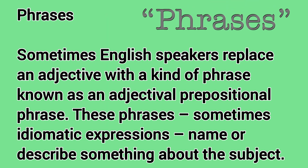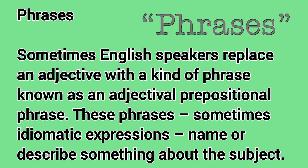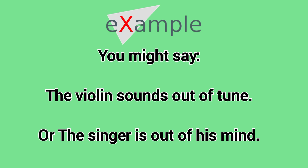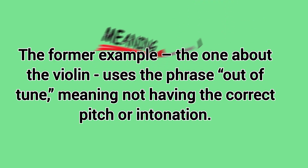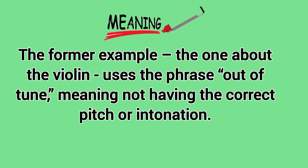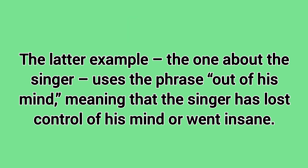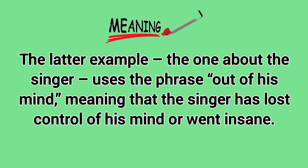Sometimes English speakers replace an adjective with a kind of phrase known as an adjectival prepositional phrase. These phrases, sometimes idiomatic expressions, name or describe something about the subject. For example, you might say 'The violin sounds out of tune,' or 'The singer is out of his mind.' The former uses the phrase 'out of tune,' meaning not having the correct pitch or intonation. The latter uses the phrase 'out of his mind,' meaning that the singer has lost control of his mind or went insane.